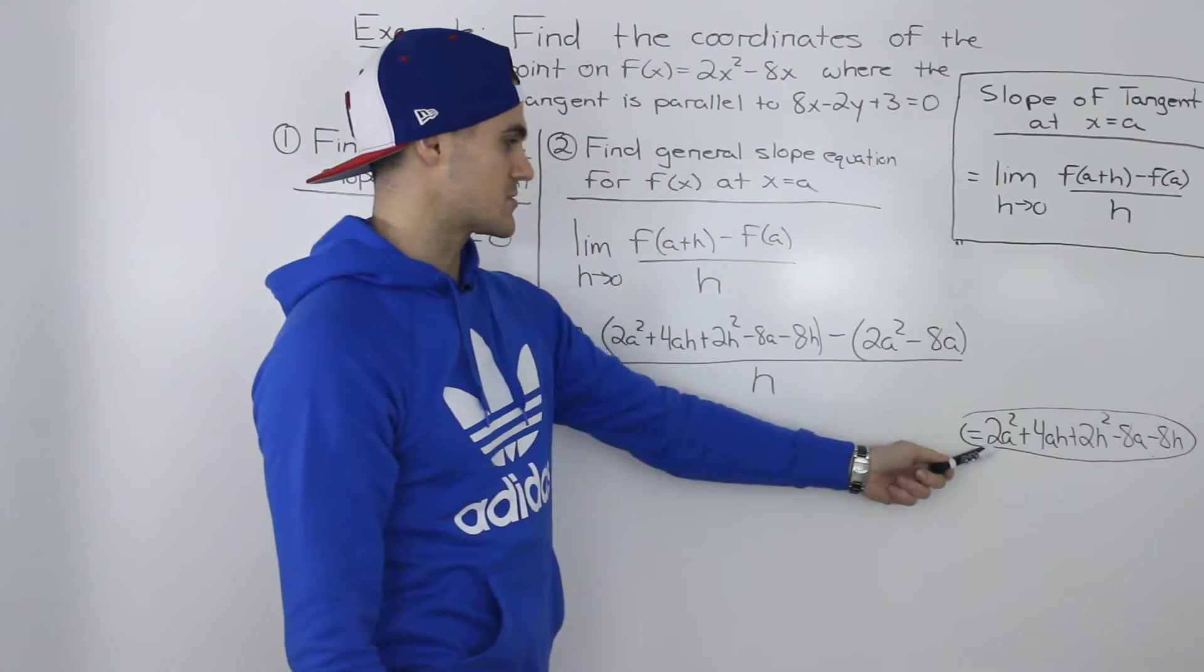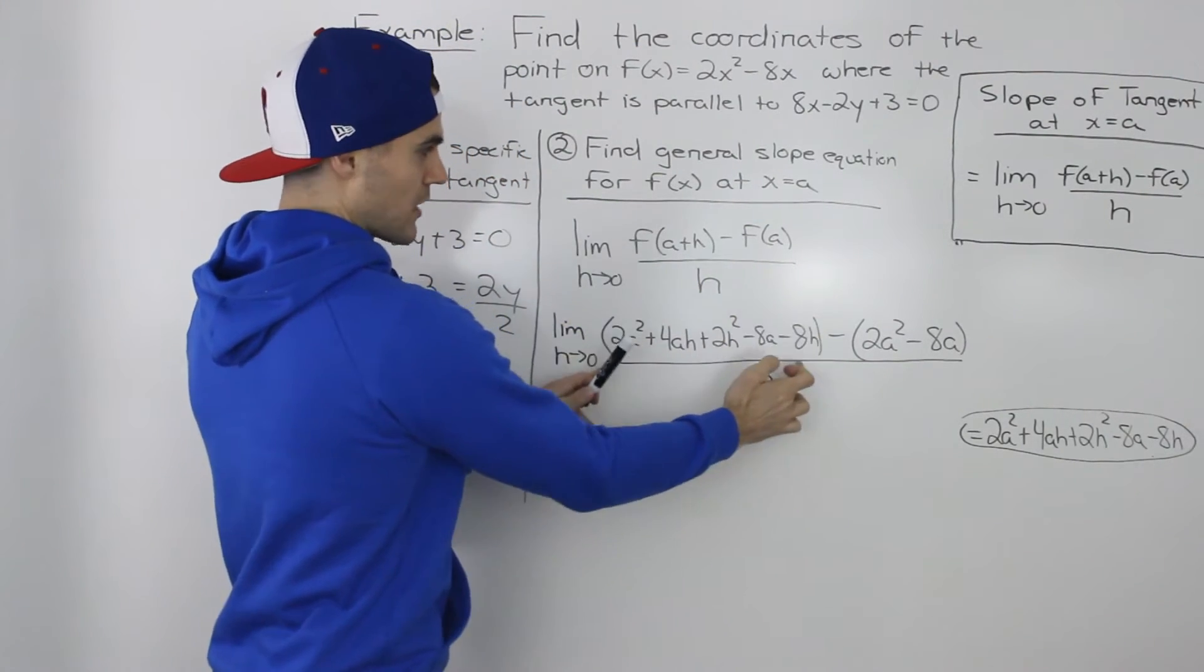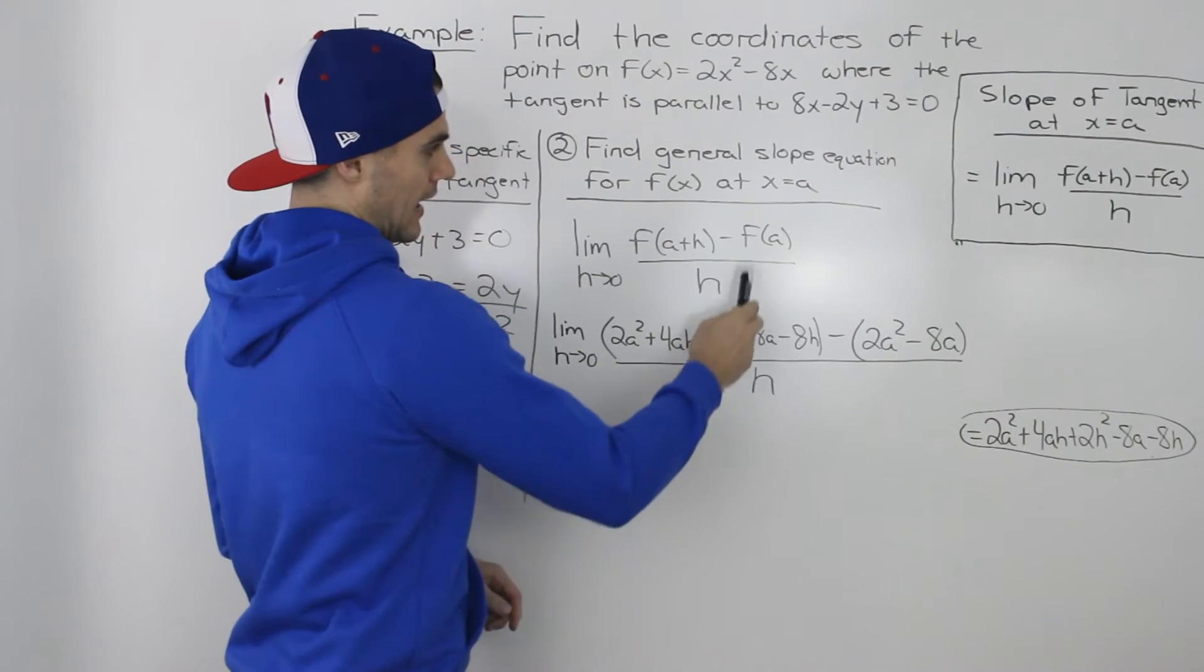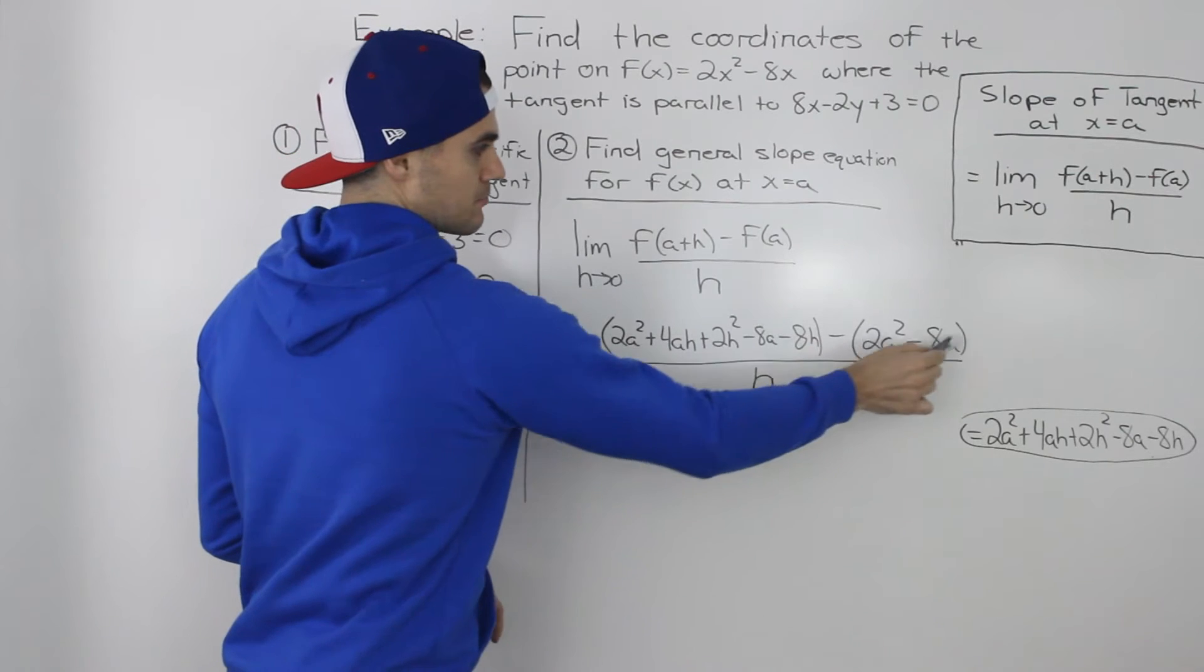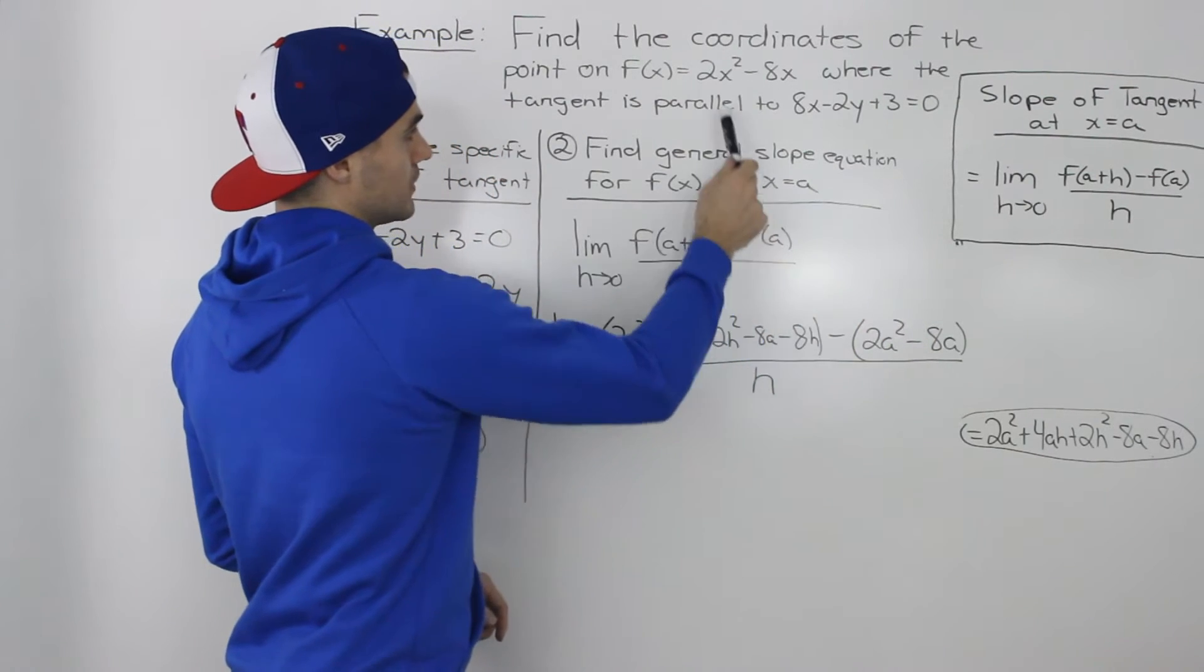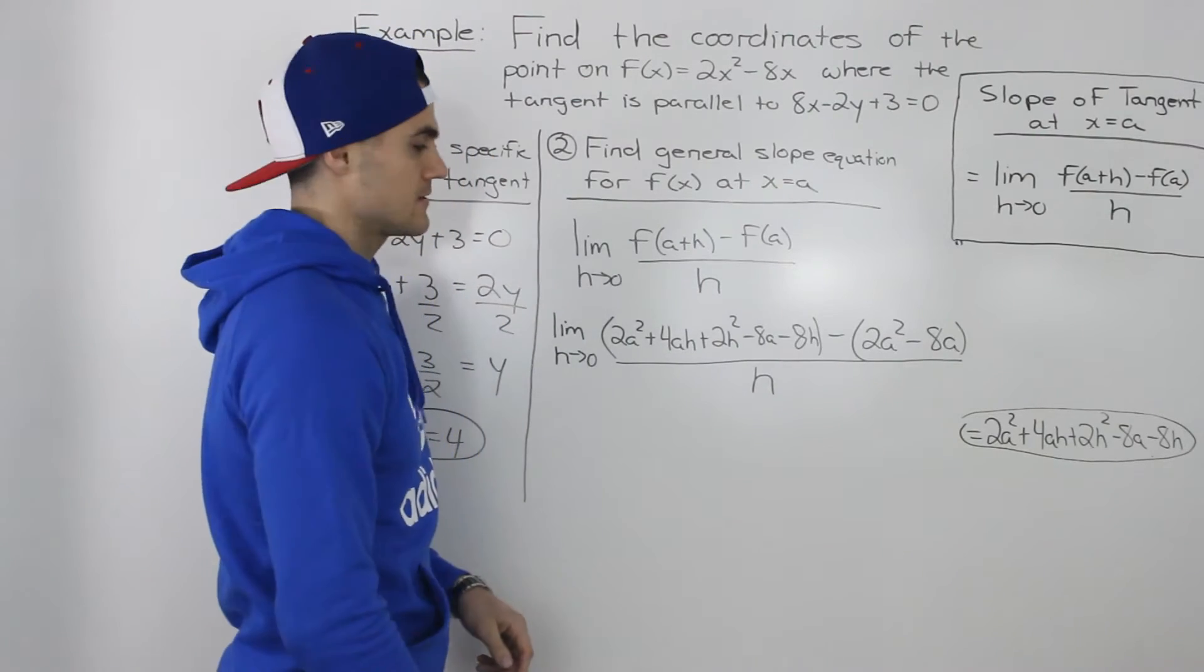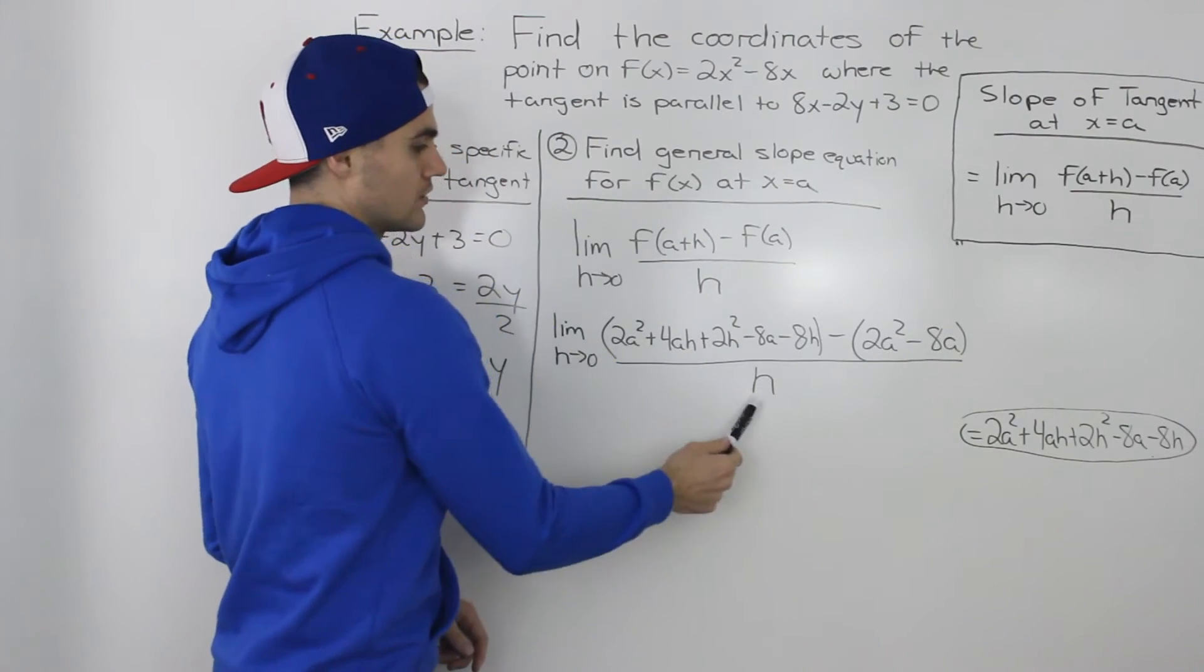So then that whole expression would go here. So this first bracket represents f(a+h), which we got on the side. And then minus this bracket is just f(a), so we plugged in a for the x's and we're left with 2a² - 8a.